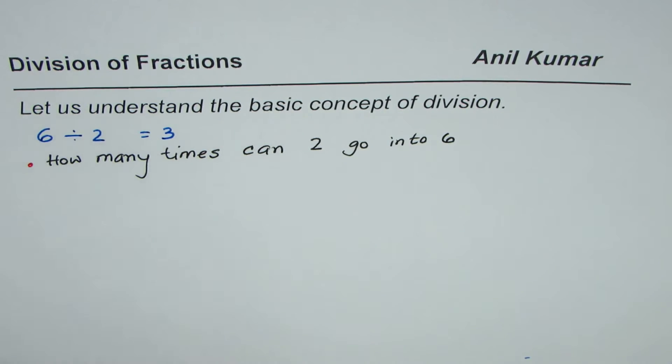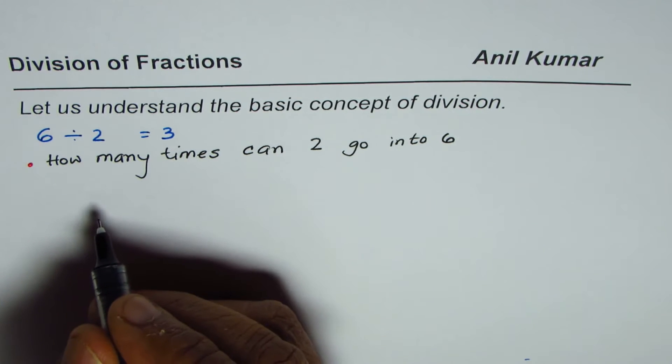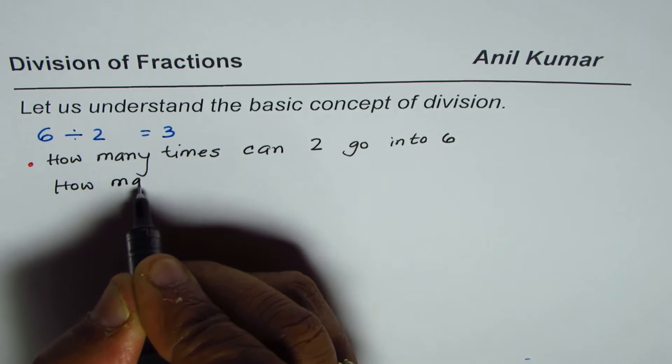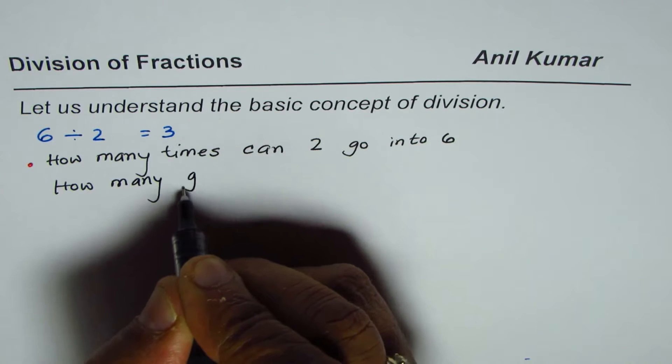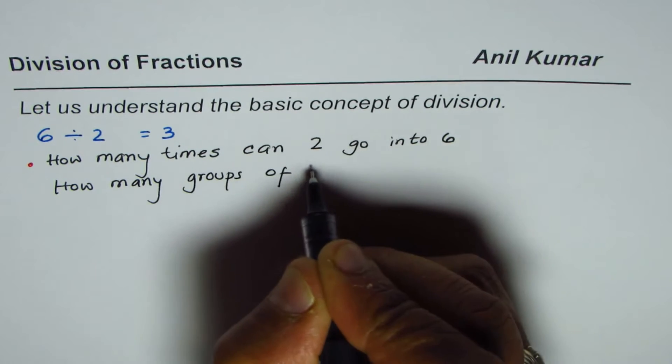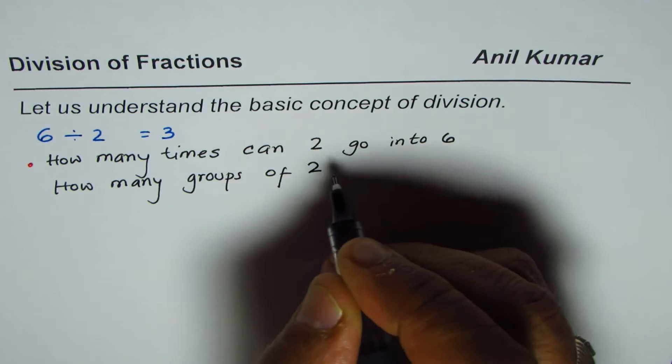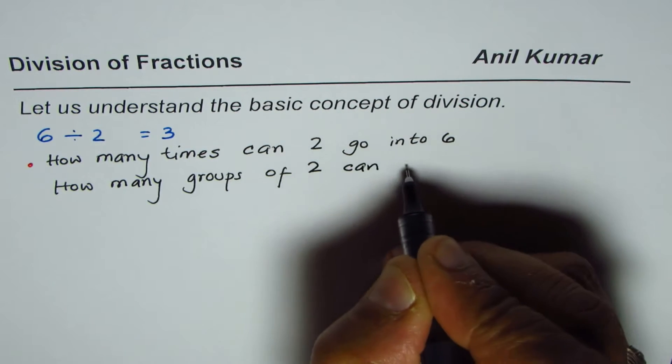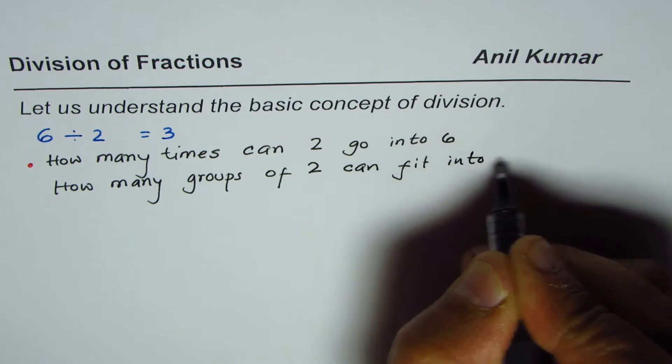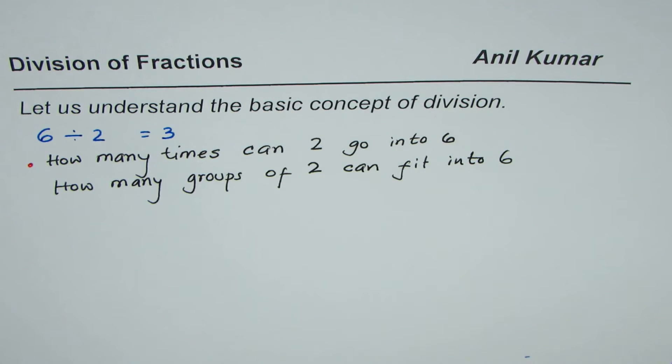2 can go into 6 three times. Or, we could ask: how many groups of 2 can fit into 6? Even then, the answer is 3. So, that is what division is.